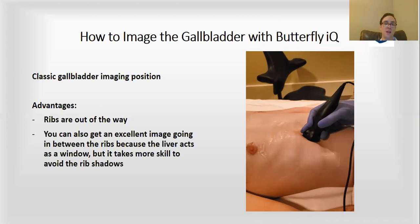Some gallbladder probes will also just try to go through the ribs — right here — and that way they can use the liver as a window, which can actually give you a very clear image as well.